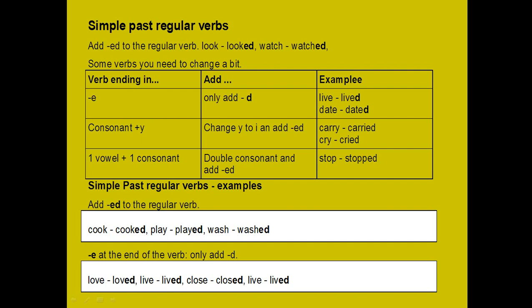Rule 3 — one vowel plus one consonant at the end: double the consonant and add -ed. Son iki harfe baktığınızda bir sesli bir sessiz harften oluşuyorsa, sondaki sessiz harfi iki yere yazıyoruz, sonra -ed ekliyoruz. For example: stop → stopped.